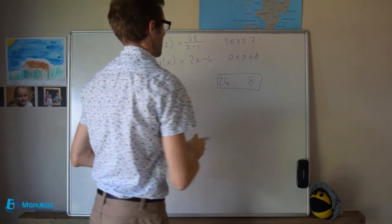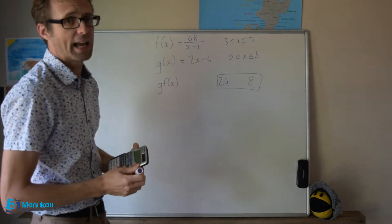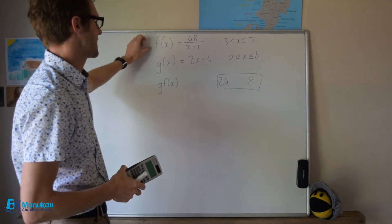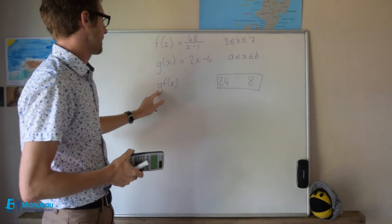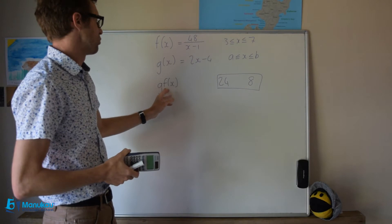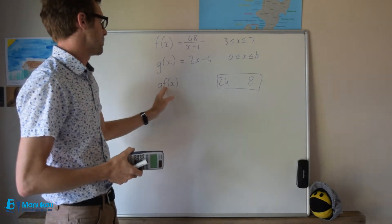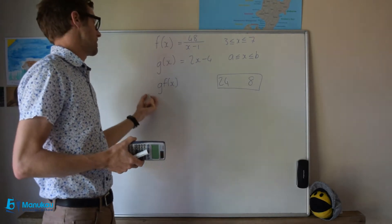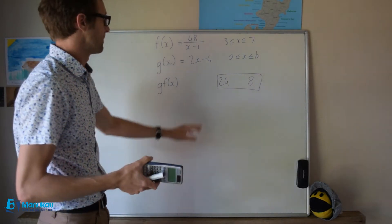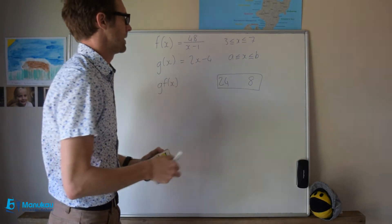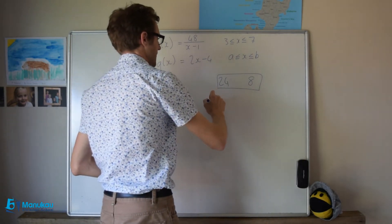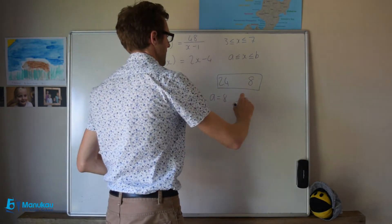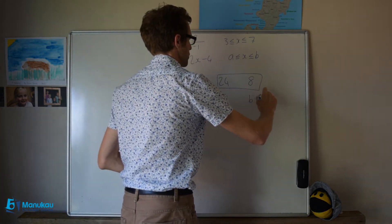So that is the range in values between 8 and 24 that f spits out for us. Now, in a composite function, remember how you put your values into f, and whatever that spits out, you chuck into g. That's how the composite function works. So our minimum value is going to be 8. We would say a is equal to 8, and b is equal to 24.